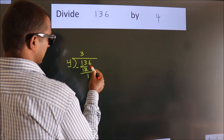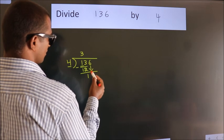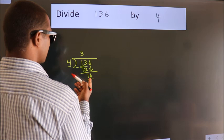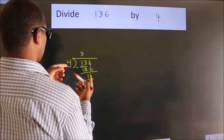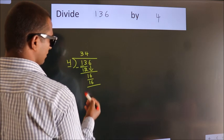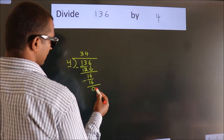After this, bring down the beside number. So 6 down. So 16. When do we get 16 in the 4 table? 4 times 4 is 16. Now we subtract. We get 0.